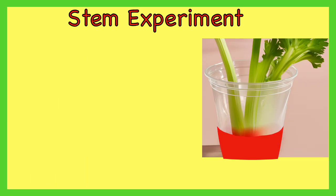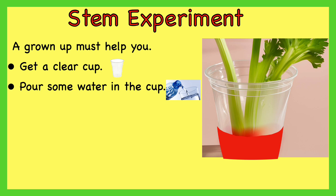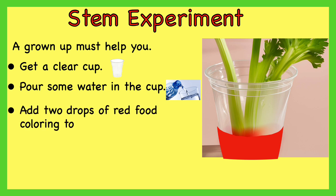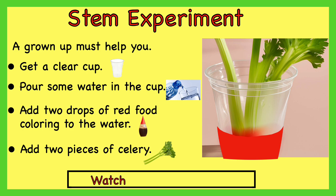Stem experiment — a grown-up must help you. Get a clear cup. Pour some water in the cup. Add two drops of red food coloring to the water. Add two pieces of celery. Watch the stem do its job.